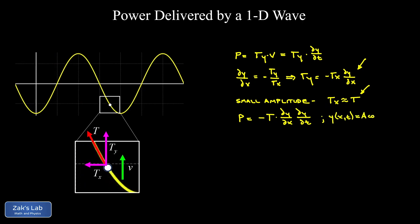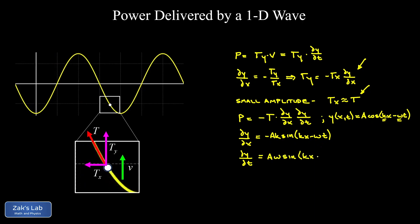Now we take the partial derivatives of the wave function. The partial of y with respect to x (holding t constant) gives −AK sin(kx − ωt), from differentiating cosine and applying the chain rule. The partial of y with respect to t gives A·ω·sin(kx − ωt), because differentiating cosine gives a negative sine, and the chain rule contributes −ω, so the two negatives cancel.